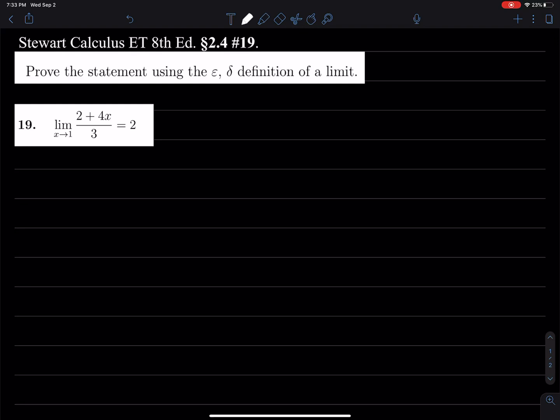Prove the statement using the epsilon-delta definition of a limit. Here we have the limit as x approaches 1 of (2 + 4x)/3 equals 2.